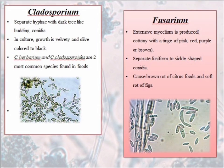Next, let's come to Cladosporium. In this case, septate hyphae with dark tree-like budding conidia are found. In culture, the growth is velvety and olive-coloured to black. Cladosporium herbarum and Cladosporium cladosporioides are two of the most common species found in food items.